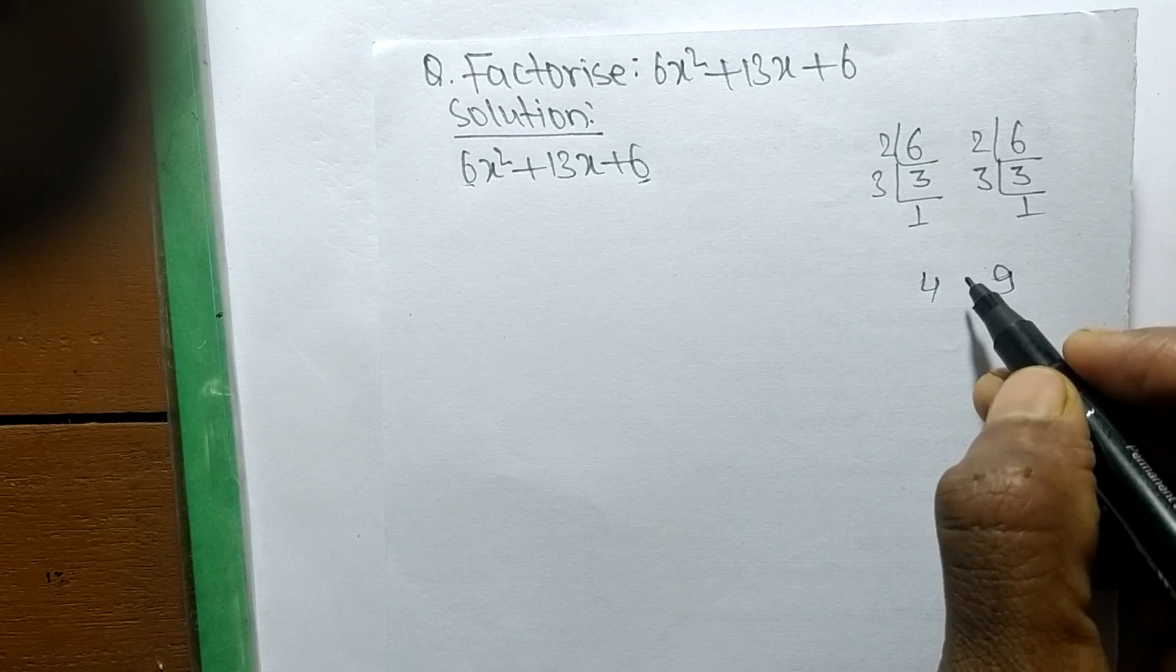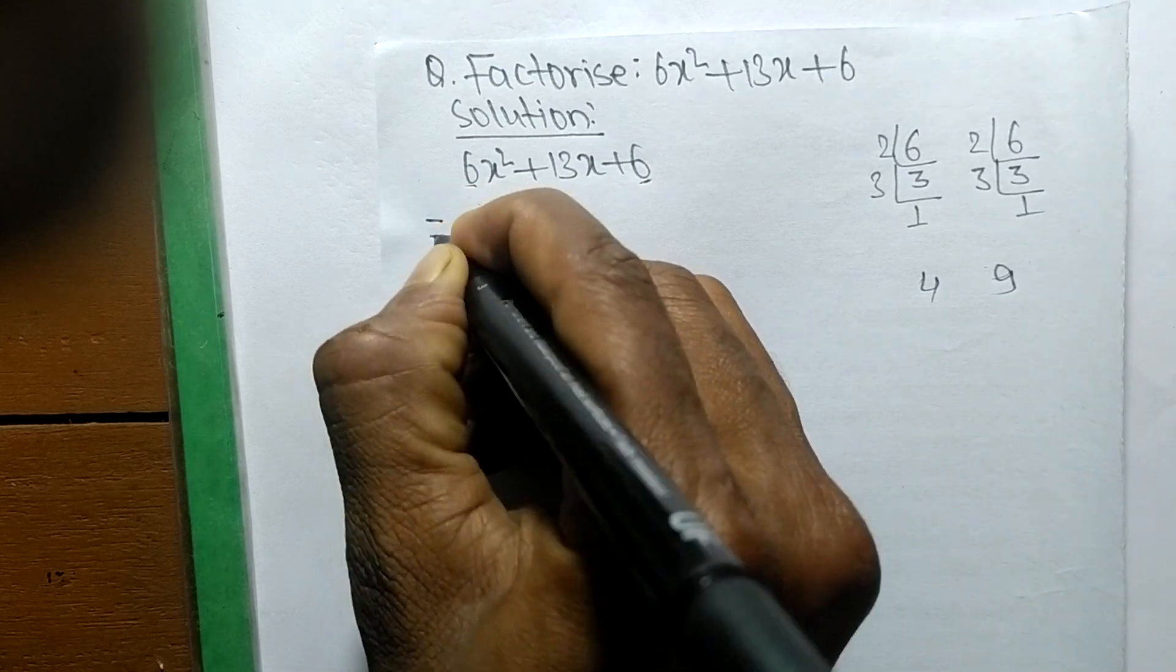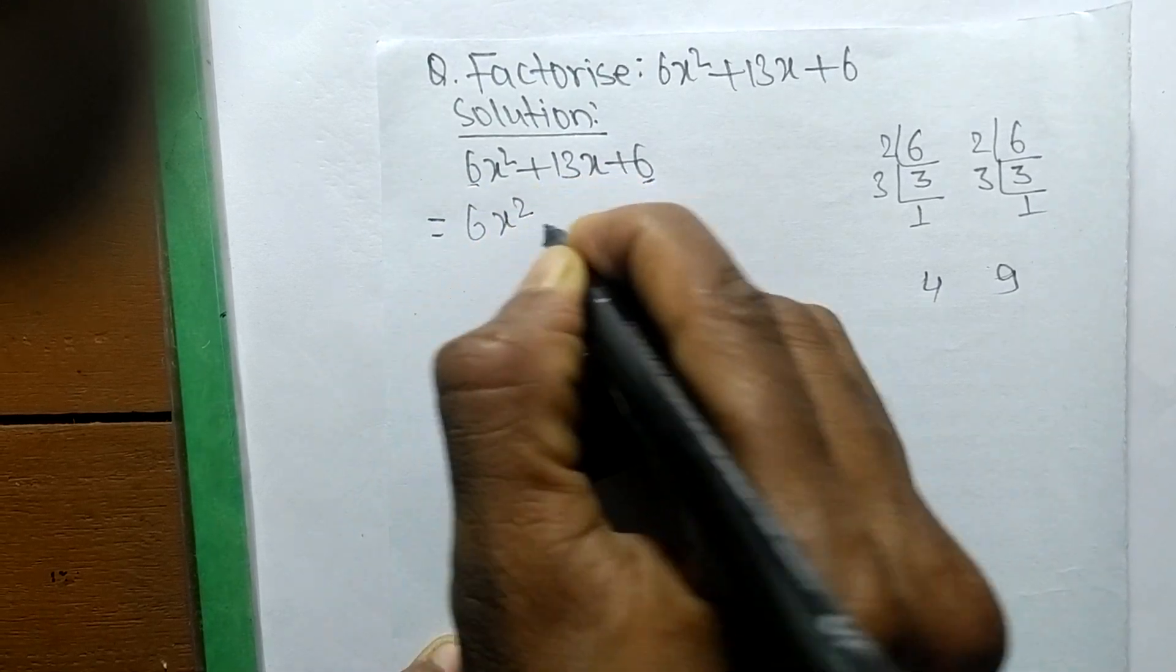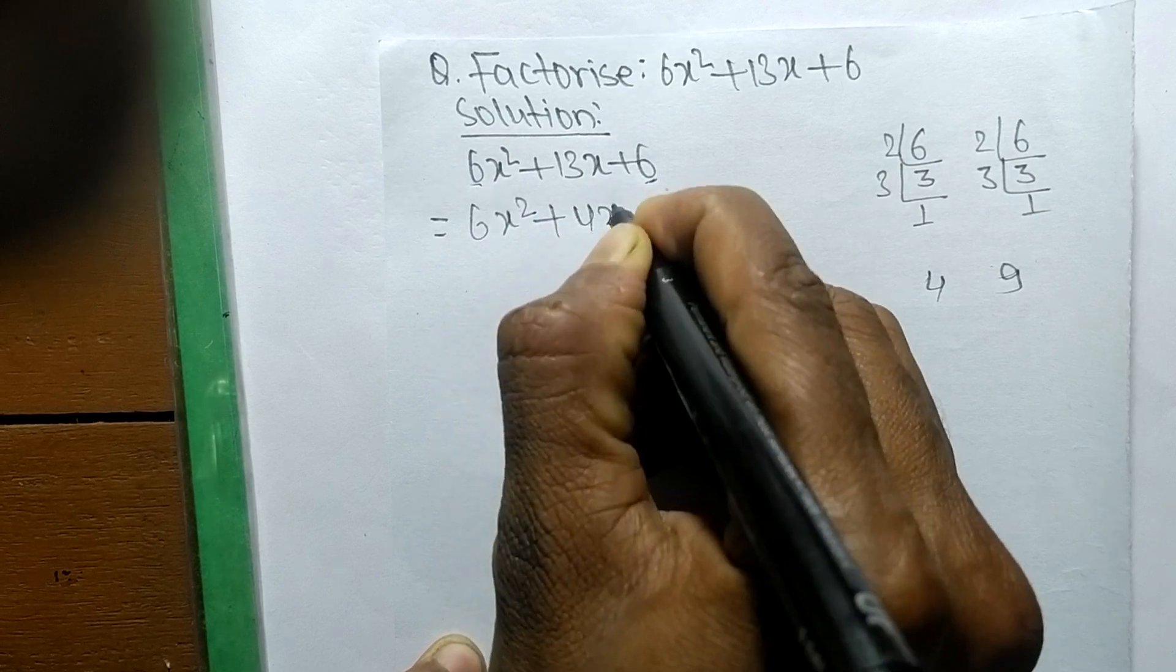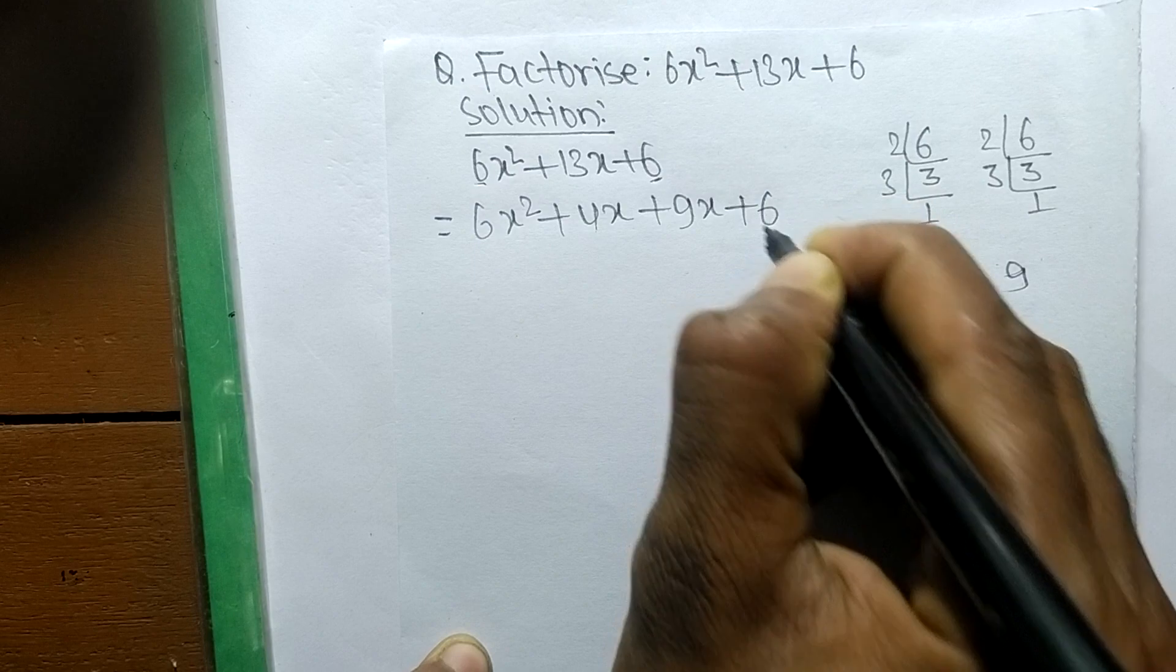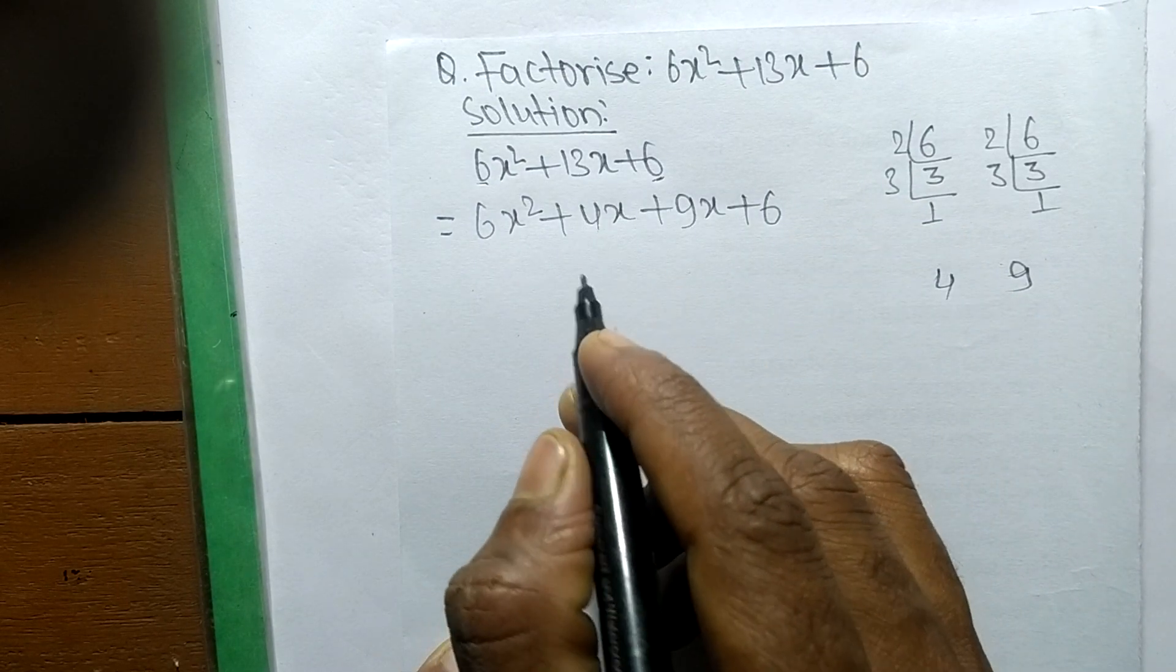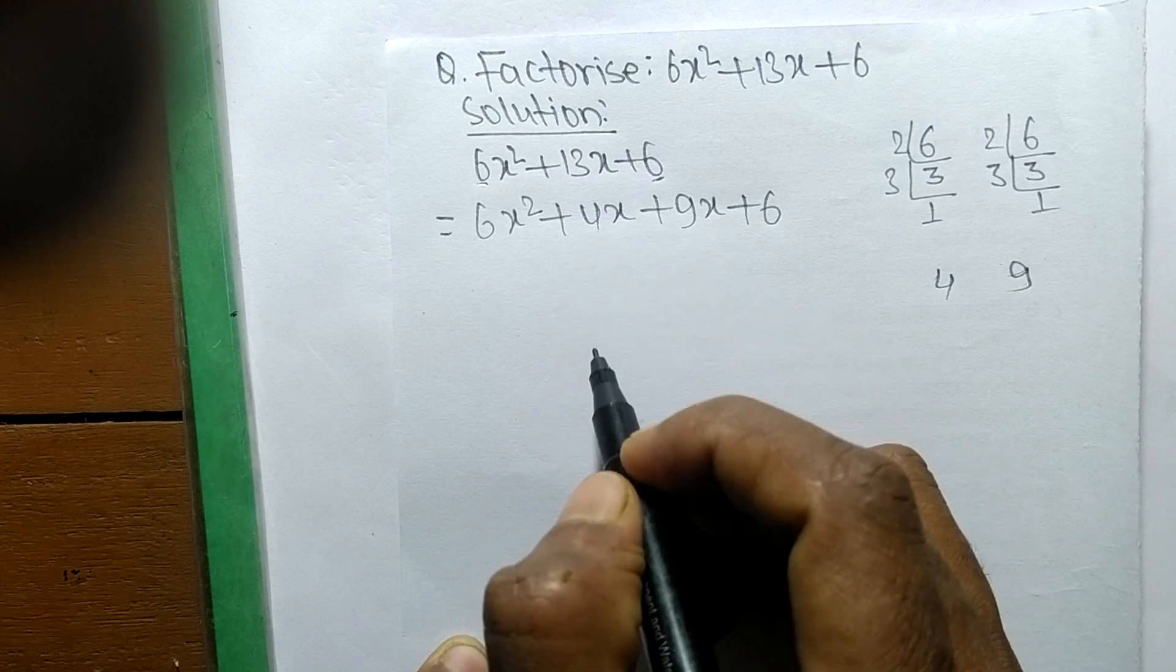So we have the numbers 4 plus 9 means 13. So we can write it 6x² + 4x + 9x + 6. So 4x plus 9x means it is 13x.